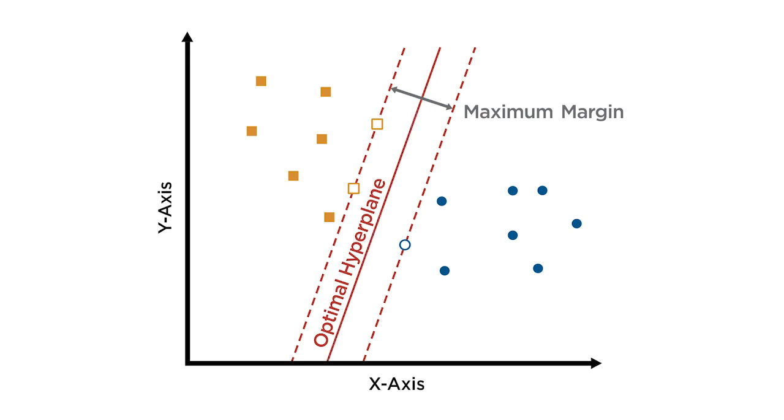In short, a support vector machine is a classifier that finds an optimal hyperplane that maximizes the margin between two classes. In real examples, it's usually impossible to find a hyperplane that perfectly separates the two classes.